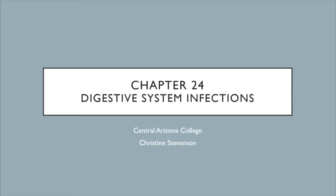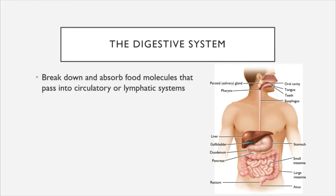Hi folks, and welcome to Chapter 24, covering digestive system infections. The digestive system's purpose is to break down and absorb food molecules, and those food molecules pass into your circulatory or lymphatic systems, where they are carried throughout the body to your various tissues and used for energy.